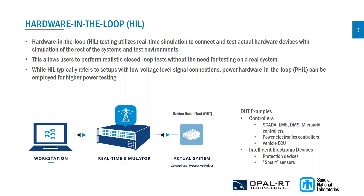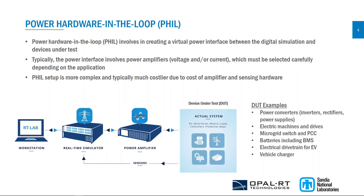Power hardware-in-the-loop can be employed for higher power testing using the same methodology. PHIL involves creating a virtual power interface between the digital simulation and the devices under test. As shown in this figure, a power amplifier sits between the real-time simulator and the device under test. The amplifier amplifies the low voltage or current signals from the simulator to actual voltage and current levels, allowing connection of actual power devices such as power converters, machines, drives, microgrid switches, points of common coupling, batteries including BMS, electrical drivetrains, vehicle chargers, and more.